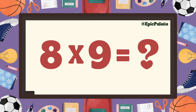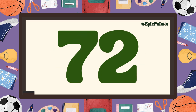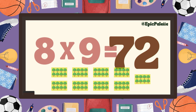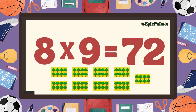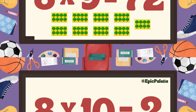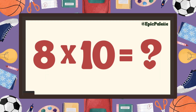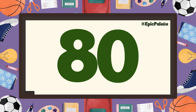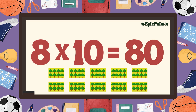Eight times nine equals... Seventy-two. That's right. Eight times nine equals seventy-two. Great job. Eight times ten equals... Eighty.